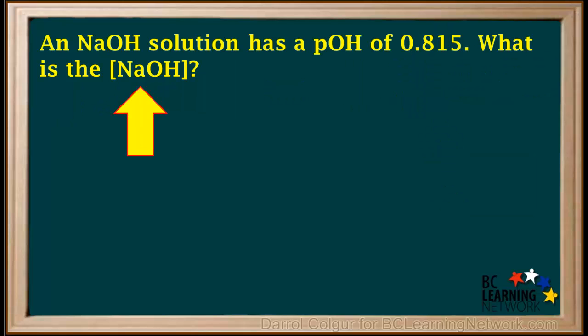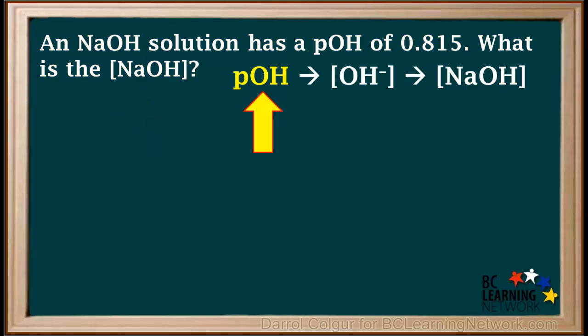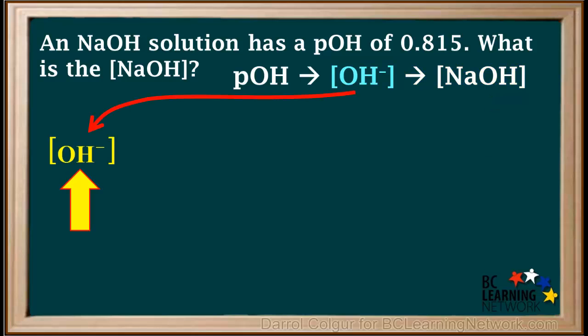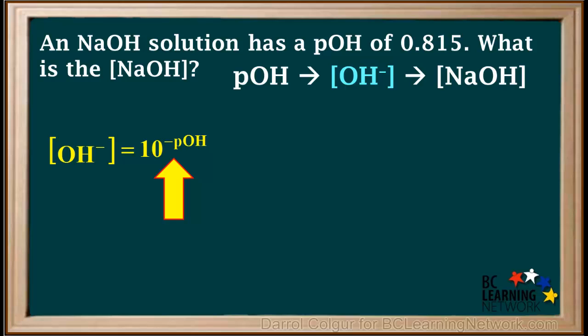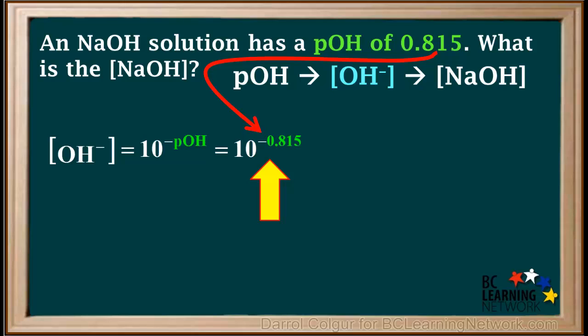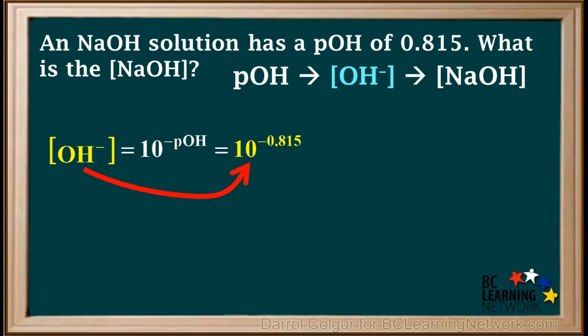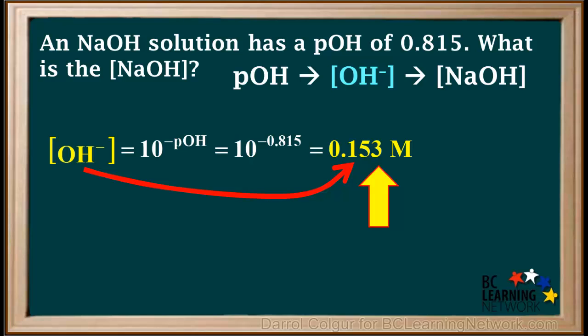Here's an example question. We're given that the pOH of a solution of NaOH is 0.815, and we're asked to find the concentration of NaOH as a whole. Pause the video and try this on your own first, then resume the video to check your answer. We start by finding the hydroxide ion concentration using the formula: concentration of OH⁻ equals 10 to the negative pOH. Substituting 0.815 for pOH, the concentration of OH⁻ equals 10 to the power of negative 0.815, which equals 0.153 molar. This has three significant figures, like the given pOH of 0.815.